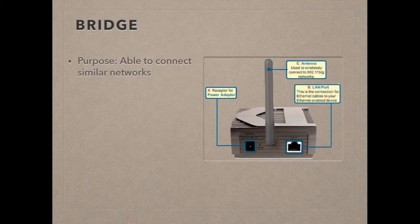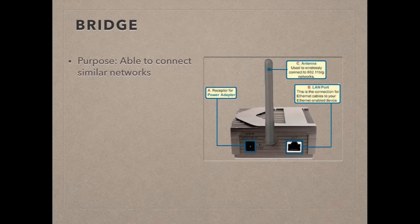A bridge connects similar networks — meaning networks that use the same rules for communication, the technical term being protocols. A bridge is also able to recognise messages on the network and pass those messages on to other devices or nodes on other networks. For example, a textile company and an accounts firm, both having the same network setup and protocols, can be connected by a bridge so the clothes designer can send costings to the accounts firm.